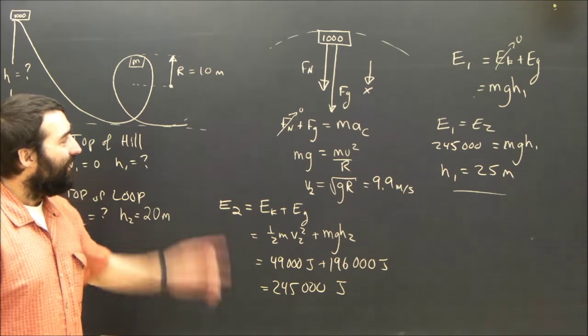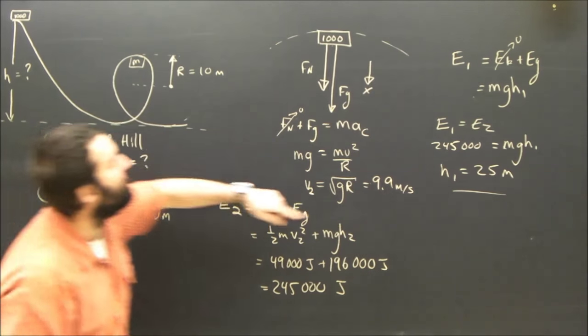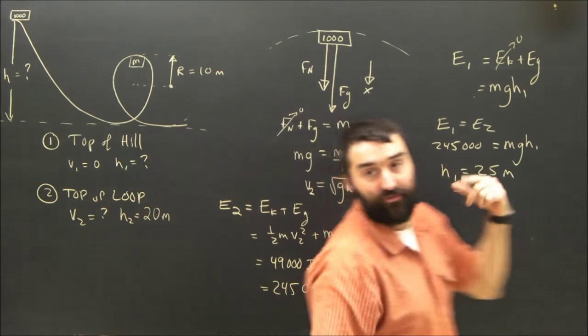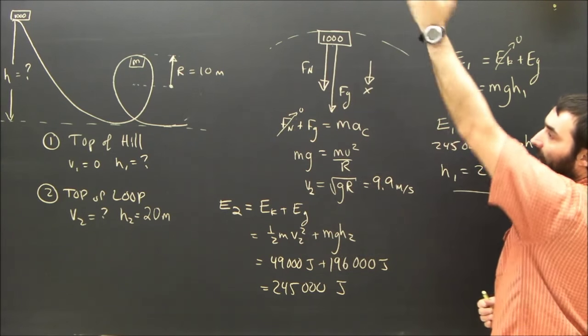Nothing very difficult by itself, but a couple of leaps to make. So you've got to understand the centripetal force part to find the speed required at the top. Then you've got to use conservation of energy. Knowing the speed and the height at the top of the loop, you can figure out the height of the initial hill.